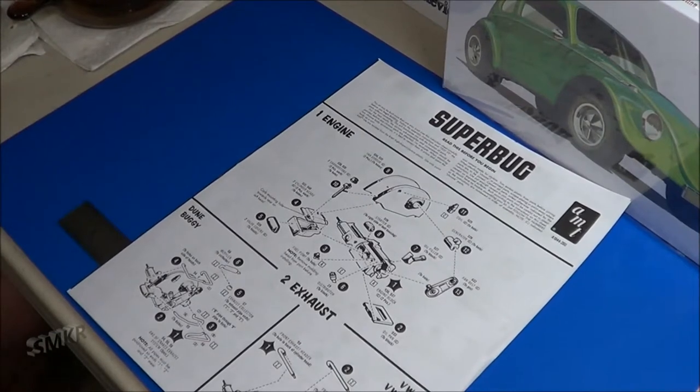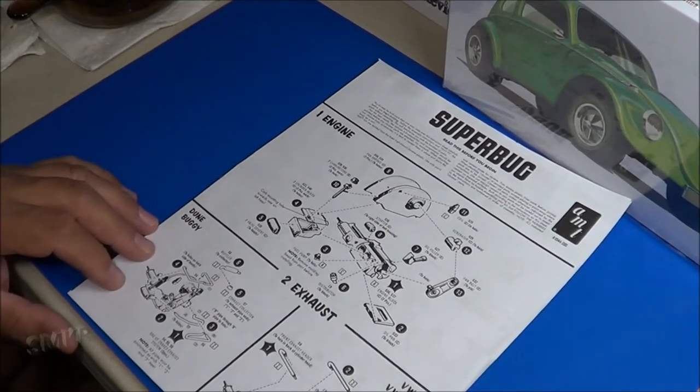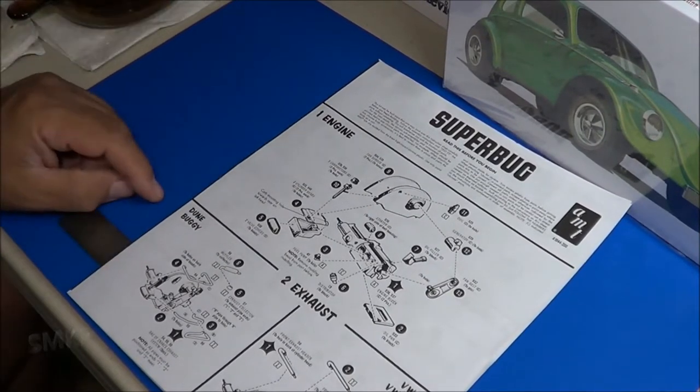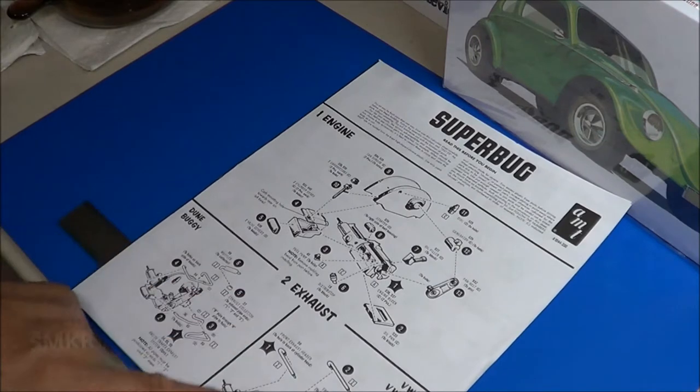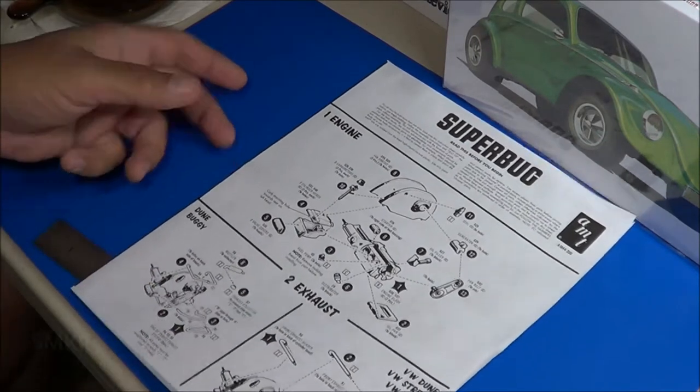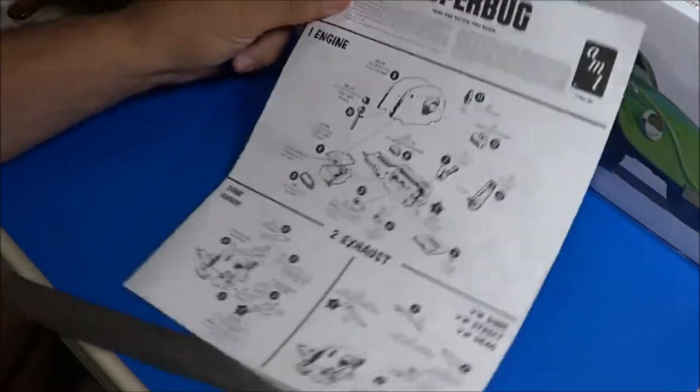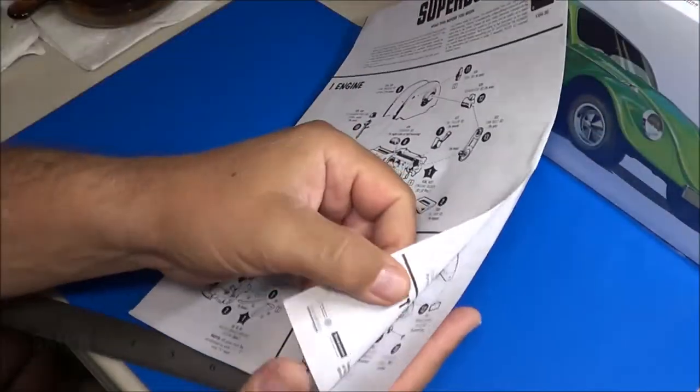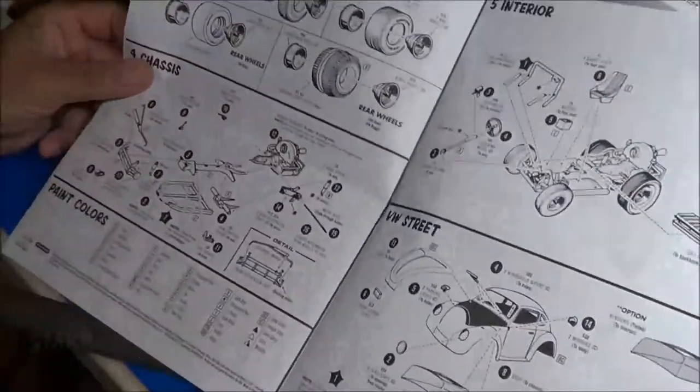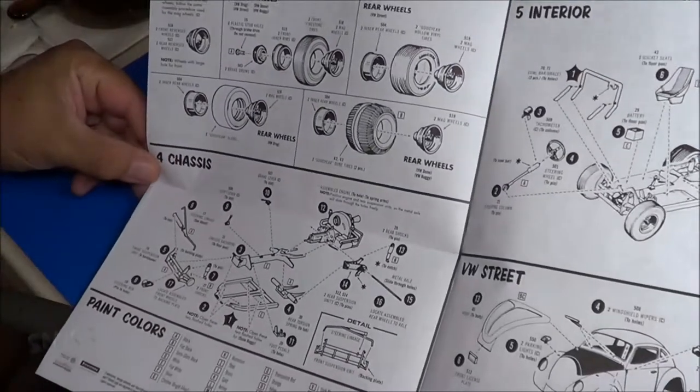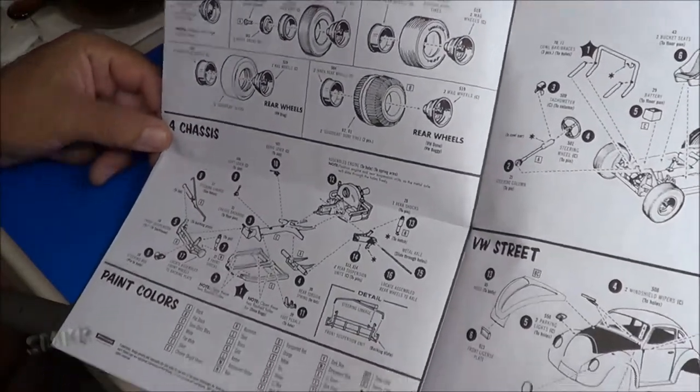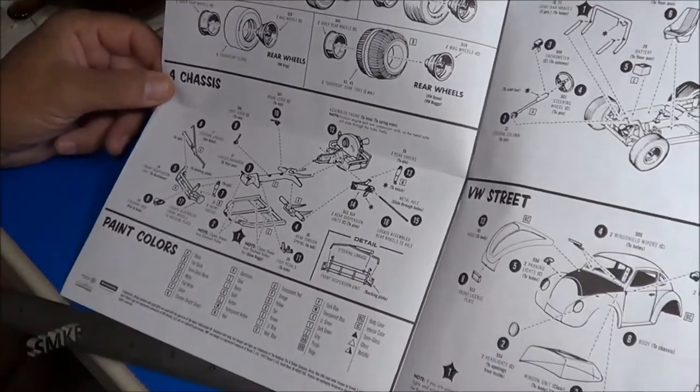The kit decals, and lastly the instructions. Here's the kit instructions for the Superbug. It goes over the engine assembly along with installing what type of exhaust you would prefer to have. Next page are your wheel options.